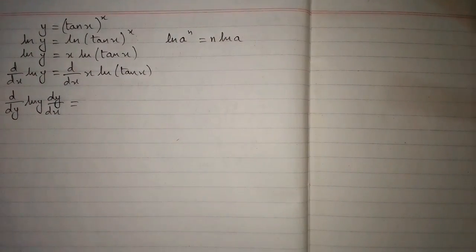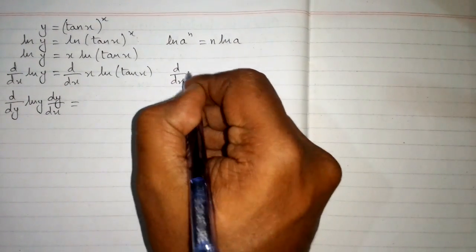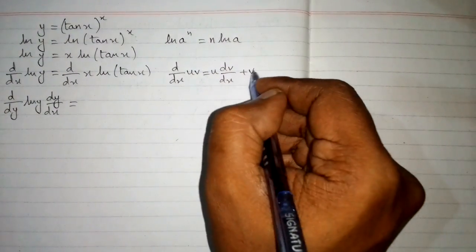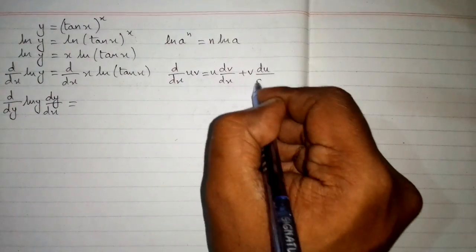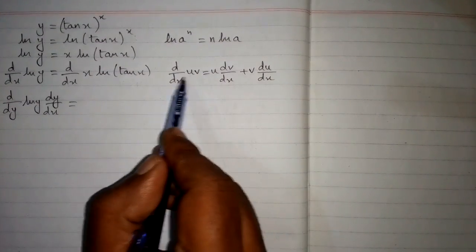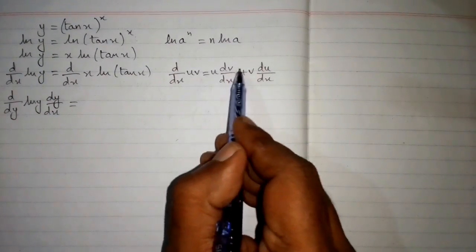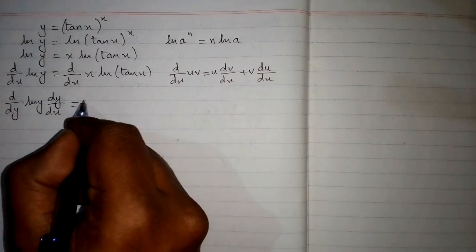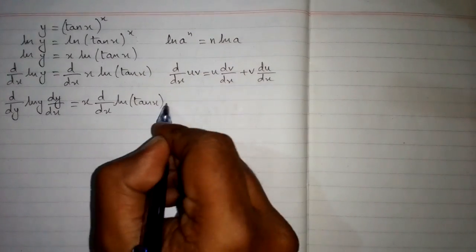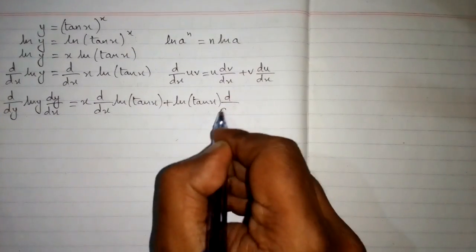On the right side of the equation we will apply the product rule of differentiation, which is derivative of uv is equal to u times derivative of v plus v times derivative of u. Here we have x in place of u and ln of 10x in place of v. So we have x times derivative of ln of 10x plus ln of 10x multiplied by derivative of x.